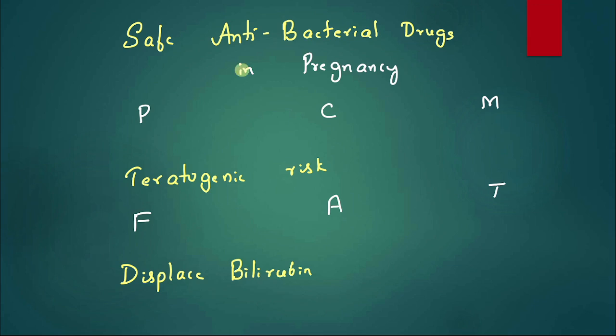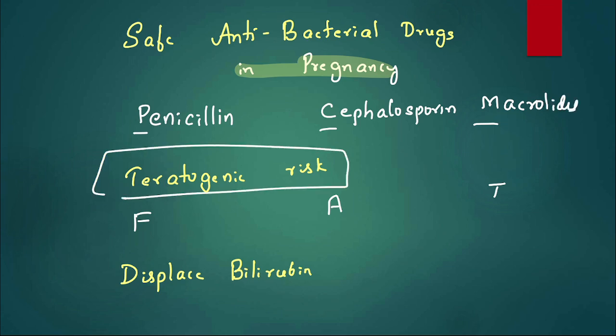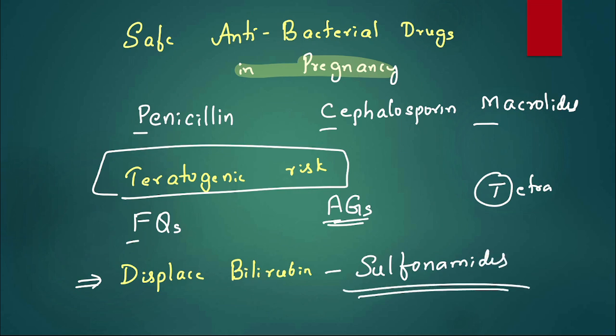What other things we need to learn from this? Which are safer antibacterials in pregnancy? Remember the mnemonic PCM: P for penicillin, C for cephalosporins, and M for macrolides like azithromycin, erythromycin - they are safe. Which are not at all given - teratogenic risk? The mnemonic is FAT: Fluoroquinolones cause cartilage damage, Aminoglycosides - ototoxicity, Tetracyclines - they cause bone and teeth damage. Another drug which can displace bilirubin, particularly if you give in third trimester, can increase the bilirubin level in the newborn - they are sulfonamides. They are not teratogenic, but they can lead to kernicterus in the newborn if you give them in pregnant women, particularly in third trimester.